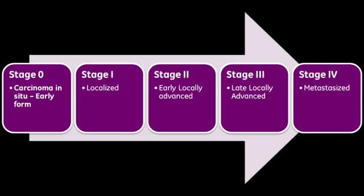What does T, N, and M of the staging system stand for? T stands for tumor size, N stands for node involvement, and M stands for metastasis. Metastasis is the most important prognostic factor. So when you want to determine the stage a cancer is in, you have to look at tumor size, node involvement, and metastasis.